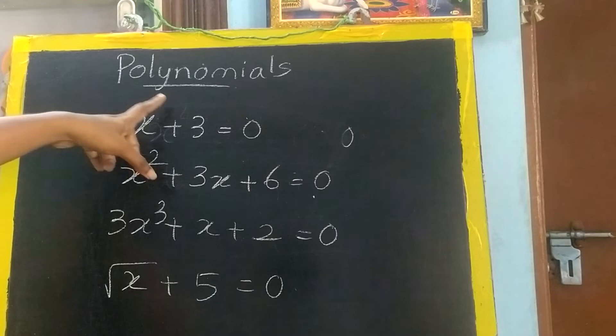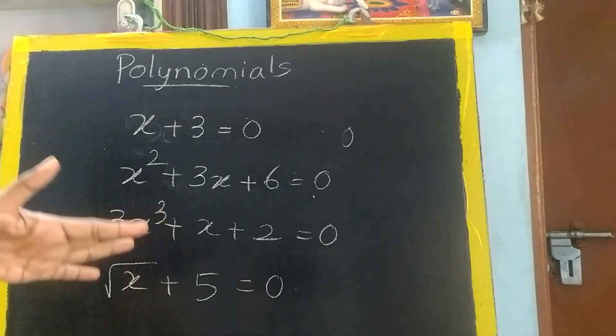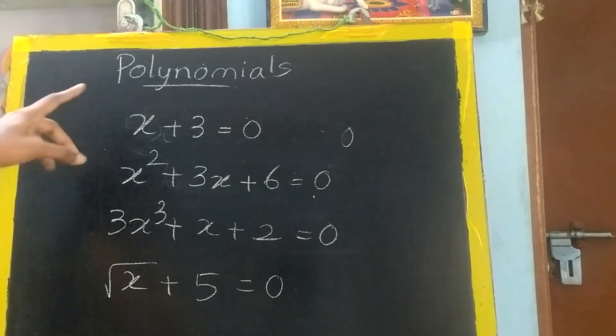Let us recall: if the degree is 1, it is called as linear polynomial. If the degree is 2, it is quadratic. If the degree is 3, it is called as cubic polynomial. Another thing, all the powers should be real numbers. Then only it is a polynomial.